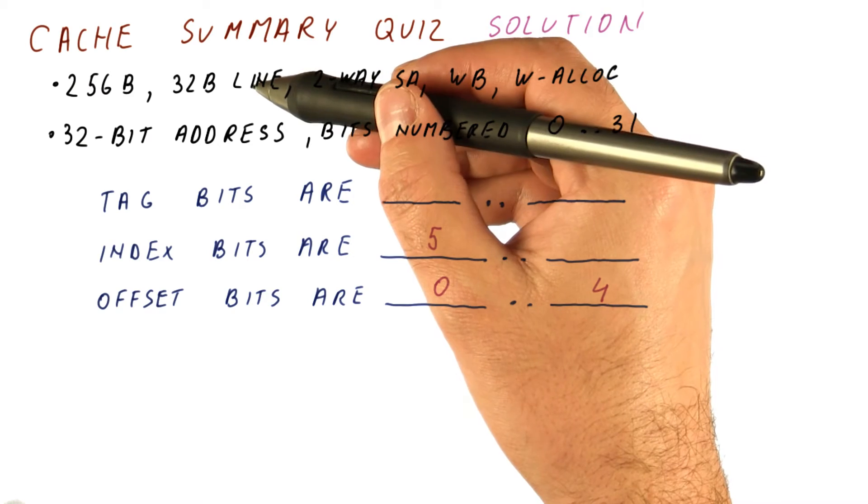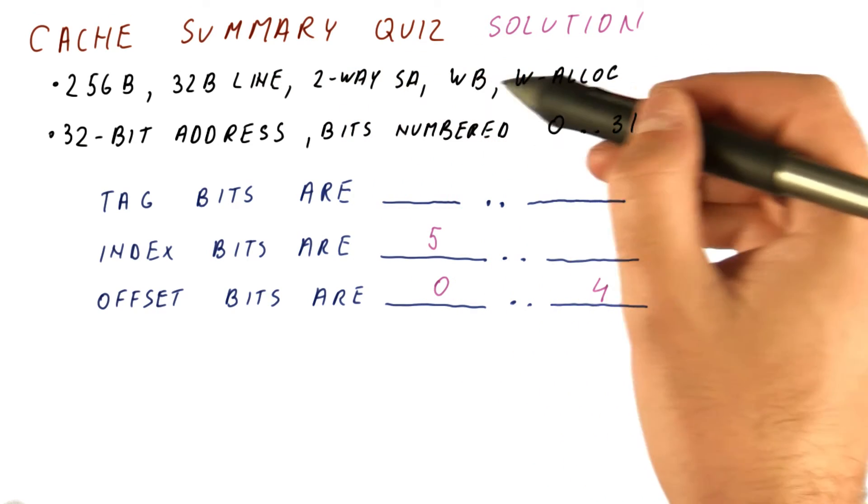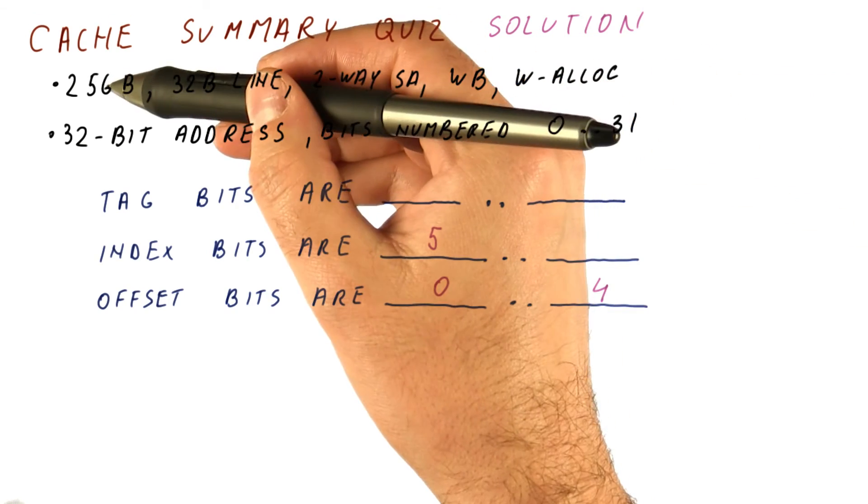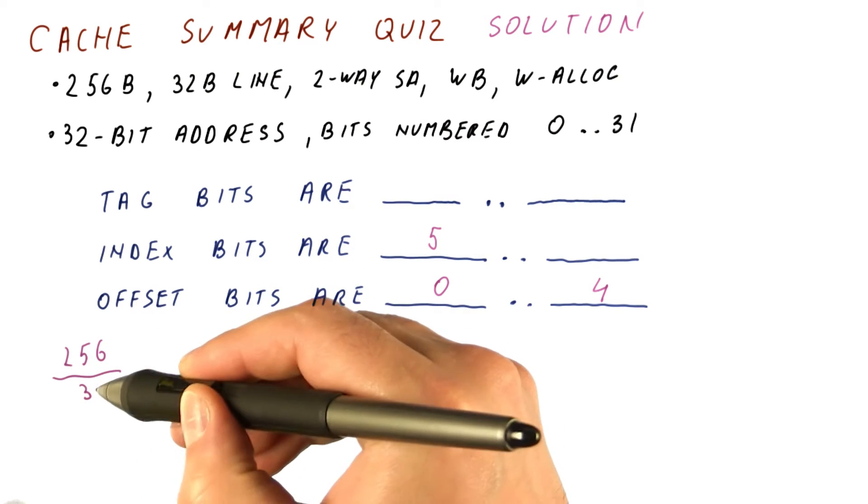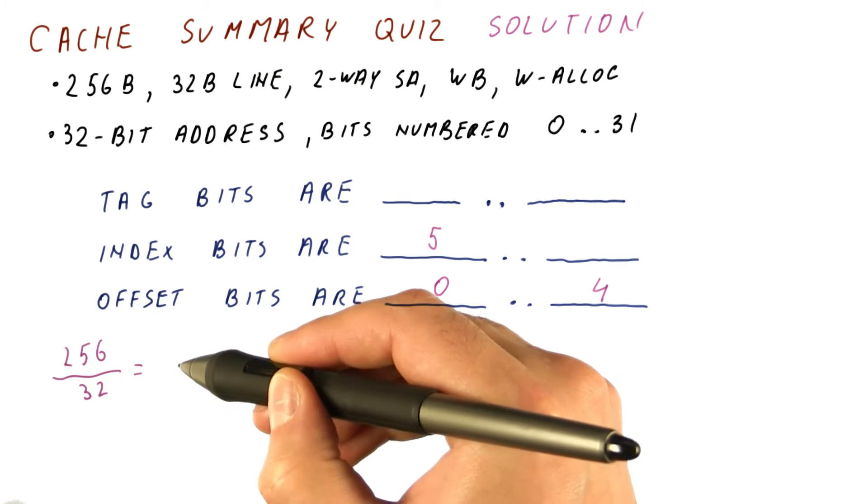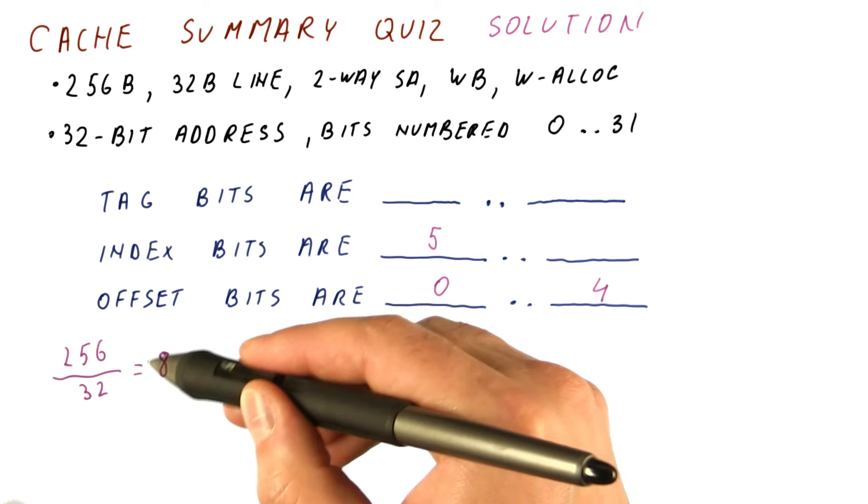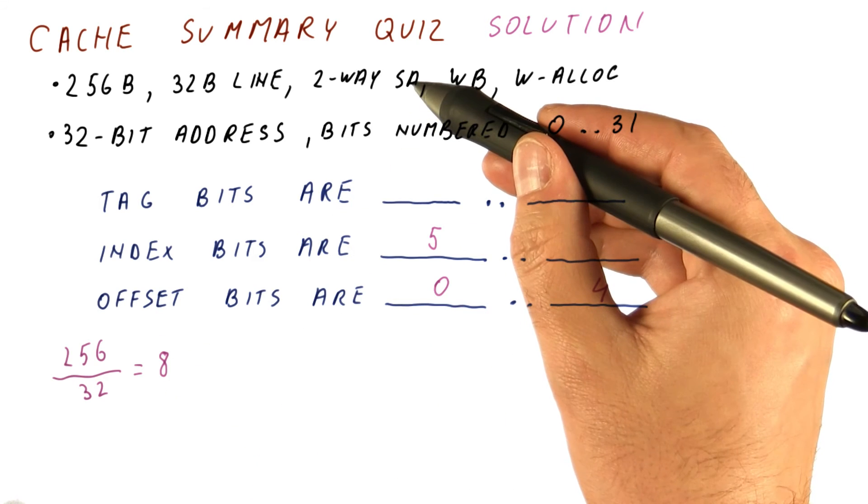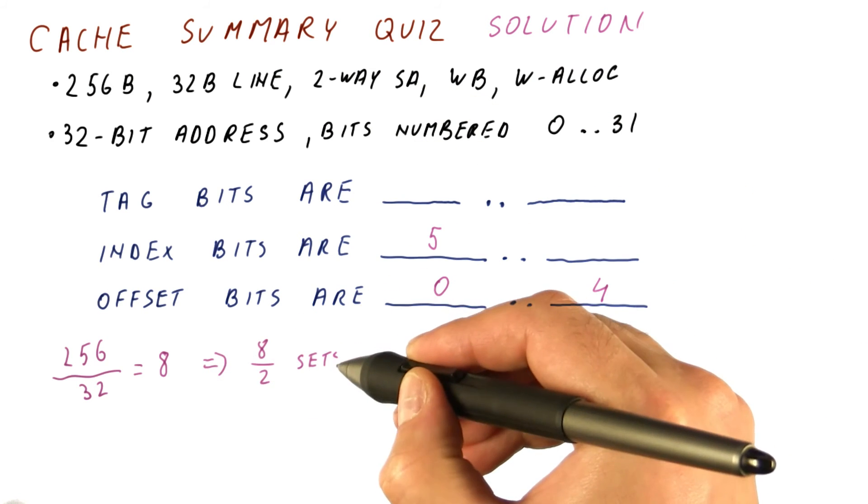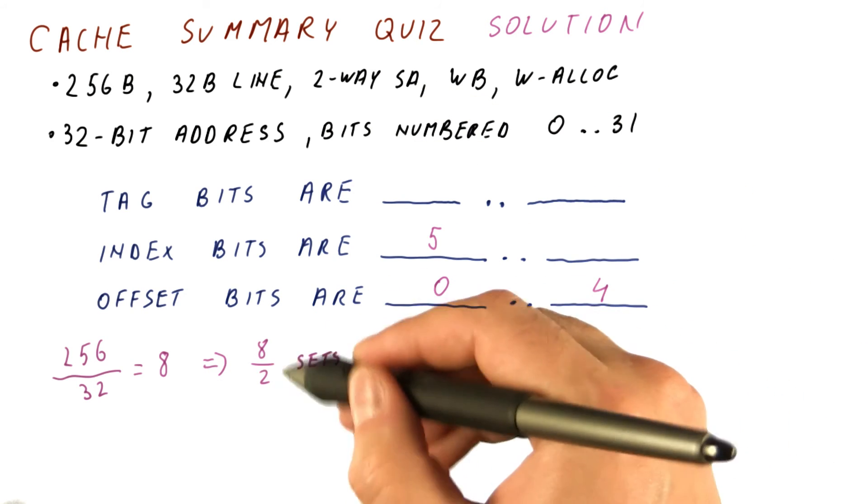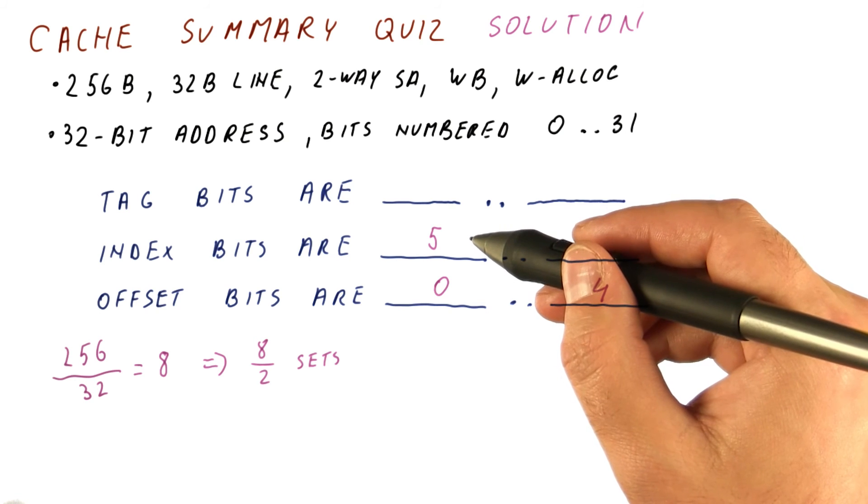To determine that, we need to determine how many sets do we have in this cache. The cache has 256 bytes divided by 32 bytes. This is the number of lines, and the result is eight. So we have eight lines. It is a two-way set associative cache. So we have eight over two sets. This is four. We need two bits to tell us which set we have.